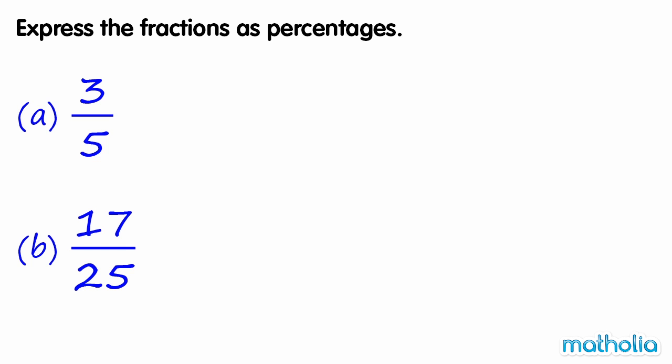We need to find an equivalent fraction that has a denominator of 100. Let's multiply by 20. Three-fifths is equal to 60 one-hundredths, which equals 60%.